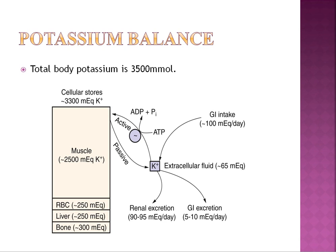Looking at total body potassium, it's around 3500 millimoles. A regular Western diet contains around 100 milliequivalents of potassium consumed each day. The normal serum potassium is around 3.5 to 5.5 mEq/L. When you consume 100 mEq/day, roughly 65 mEq is in the extracellular fluid, which could raise serum potassium to 7, 8, or 9 mEq/L — potentially causing fatal arrhythmias.